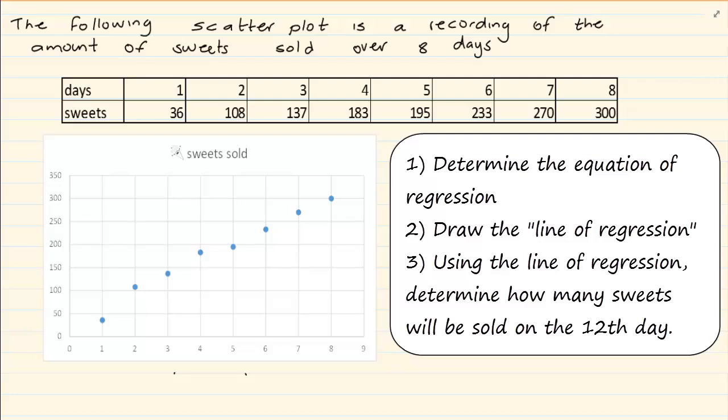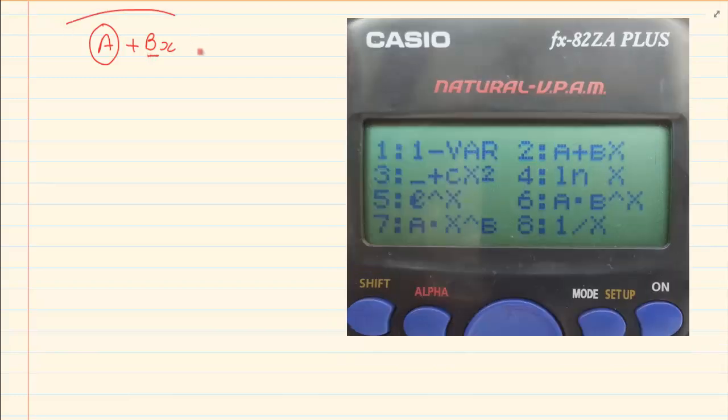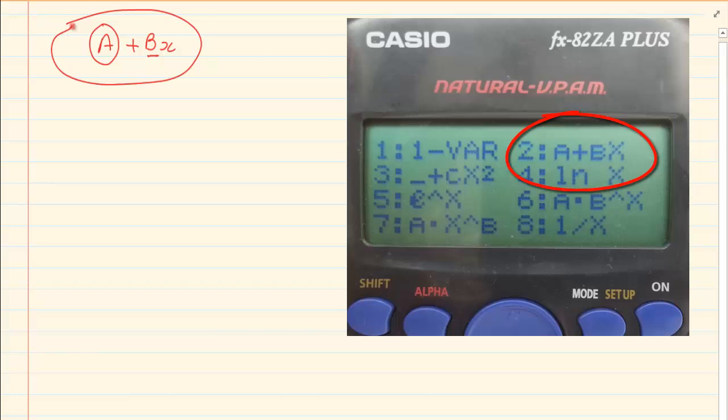The equation of regression, if you look on your calculator, you are going to press mode and you are going to go to 2. But what you are looking at is the sum that looks like this. If you look at it, you can see it on your calculator, a plus bx. Now a represents the y intercept and b basically represents the gradient of the line. Now how do we do this? You are going to press mode, you are going to press 2 and then you are going to press 2. You are looking specifically for this on your calculator. So you press 2. On my calculator it is 2.